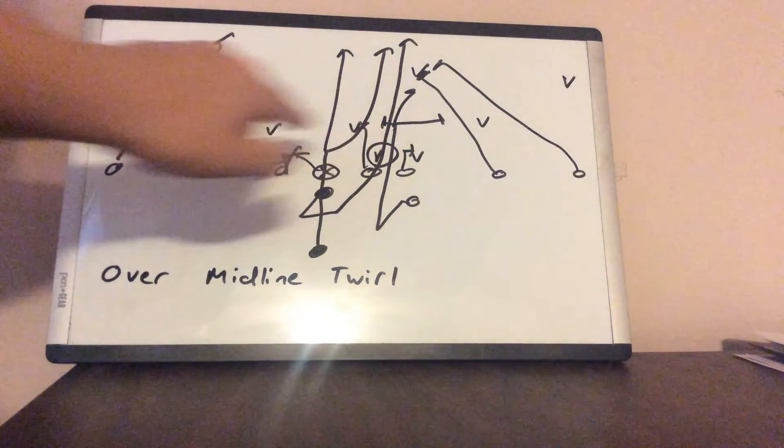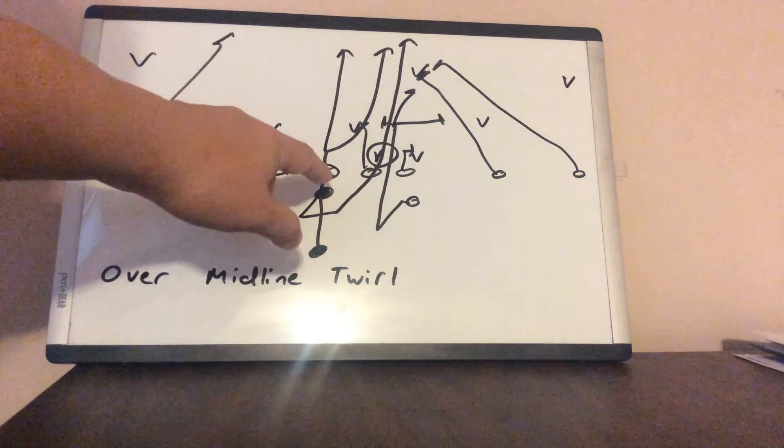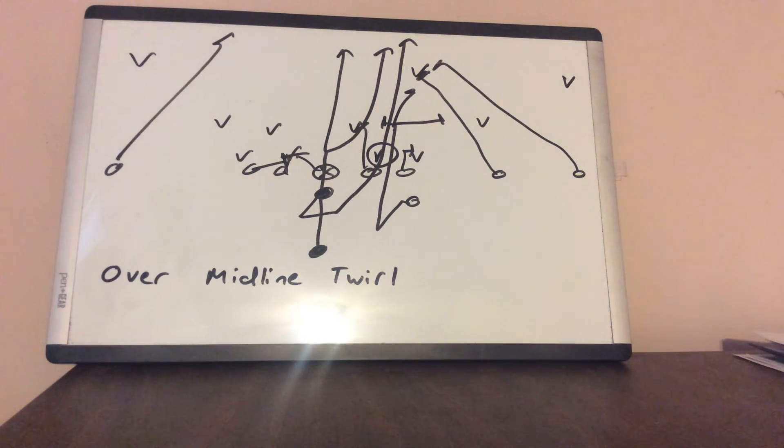Unless the three technique cancels the B back. If the three technique cancels the B back, the quarterback will reseat the ball, step with his play side foot, replace the three technique, and score.